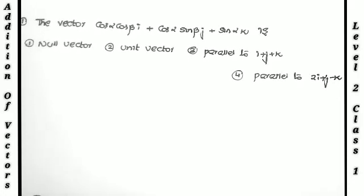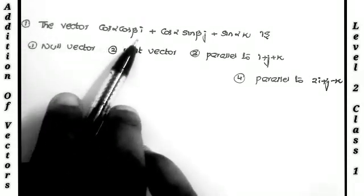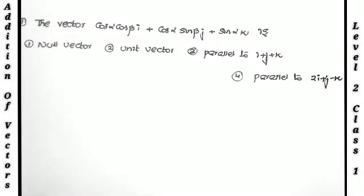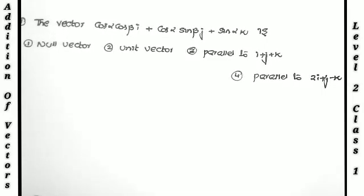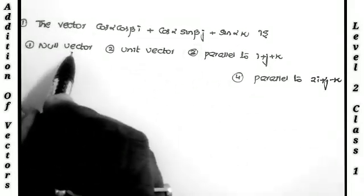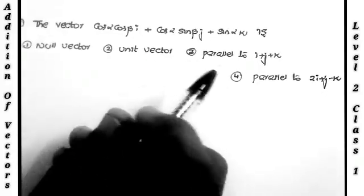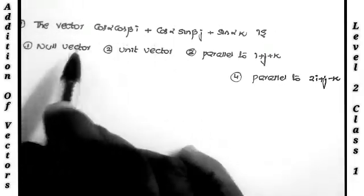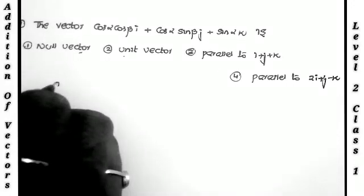Let us start the class. The first problem: the vector cos α cos β · i + cos α sin β · j + sin α · k — what is this vector? The options are: null vector, unit vector, parallel to i+j+k, or parallel to i+j−k. First I am finding the magnitude to check whether it is a null vector or unit vector.